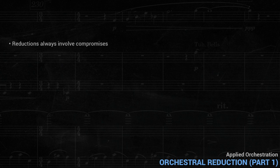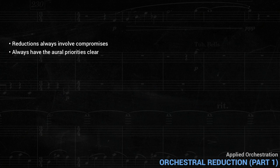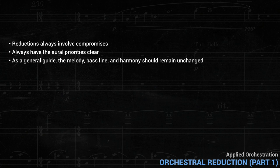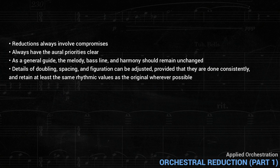To sum up: reductions always involve compromises. The key is to always have your aural priorities clear. Only if the person doing the transcription understands the composer's choices can they be made intelligently. As a general guide, the melody, bass line, and harmony should remain unchanged. The details of doubling, spacing, and figuration can be adjusted, provided they are done consistently and retain at least the same rhythmic values as the original wherever possible. In the next lesson, we'll look at reducing some more complicated textures.